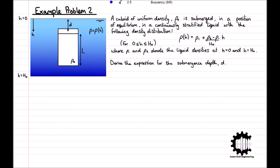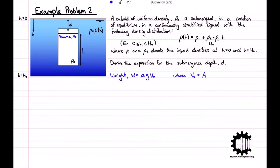You're welcome to pause the video here if you'd like to have a go at answering this question yourself. We'll start by noting that the cuboid has a volume of v_0, so the weight of the cuboid W equals rho_0 g v_0. We also note that v_0 is equal to A times l, where A is its plan-view cross-sectional area.